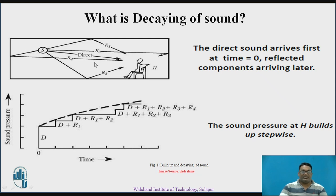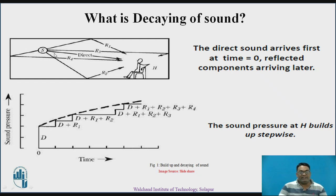The sound always travels with multiple reflections and in a direct path. The direct sound arrives first at T = 0, meaning the time taken by the sound to reach the person directly from the source is zero. Whereas the reflected components R1, R2, R3, and R4 arrive later with a particular time delay.